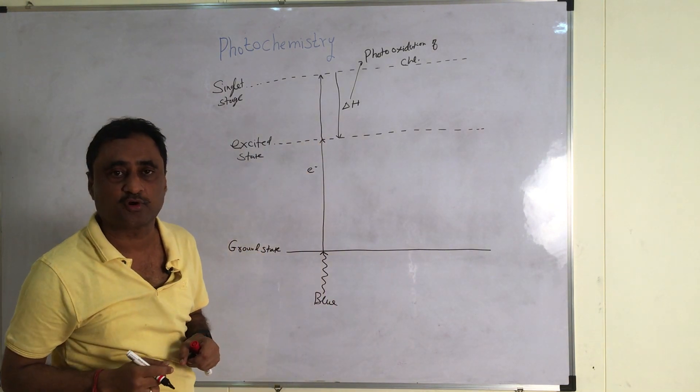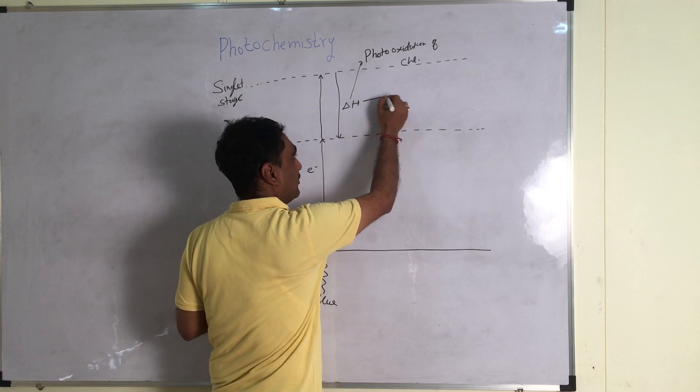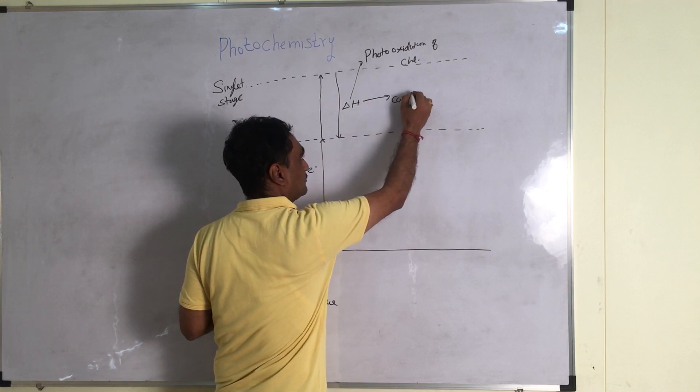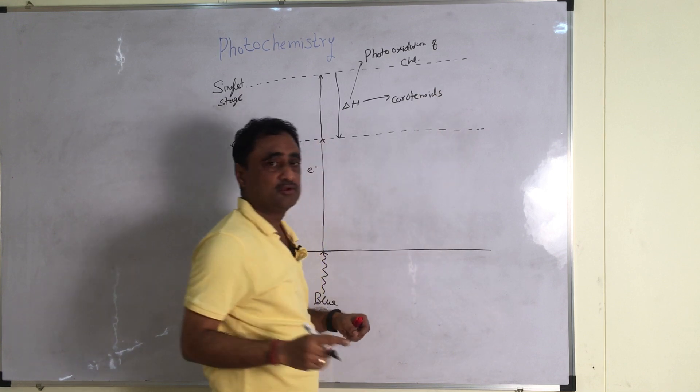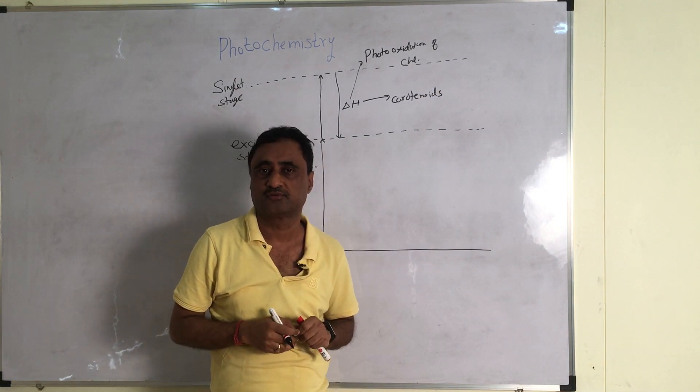But naturally what happens? This photo oxidation is actually prevented. And how is it prevented? It is prevented by carotenoids. So we know very well, one of the prime functions of carotenoids is to prevent the photo oxidation.